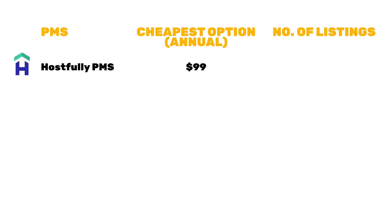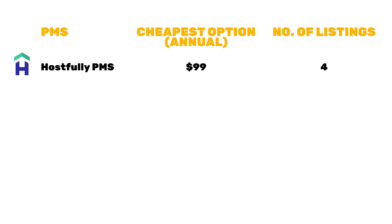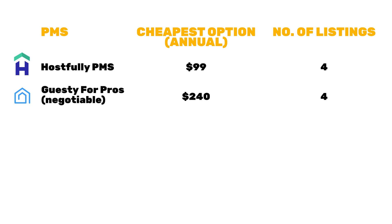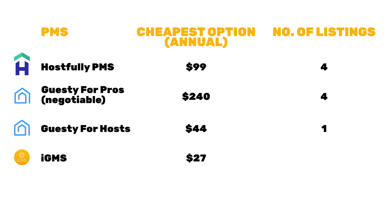Before we jump in, I want to cover pricing. Some companies don't even show their pricing — looking at you, Guesty for Pros. The pricing here is $99 for four listings, and that's the minimum. This is also for the annual fee; if you don't do annual it might cost more. On Hostfully specifically it costs a $400 integration fee. Guesty for Pros — that host was paying $60 per listing. If you're three or less you are Guesty for Hosts, which I'll be reviewing shortly at $44 for one listing. iGMS is $27 for one listing.